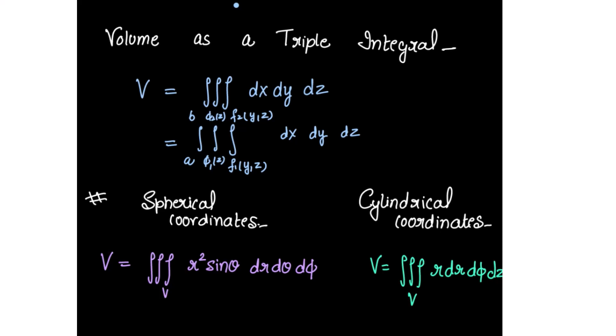For spherical coordinates, the volume is the triple integral of r² sin θ dr dθ dφ. And for cylindrical coordinates, the volume is the triple integral of r dr dφ dz.